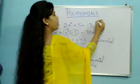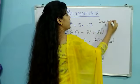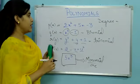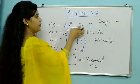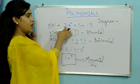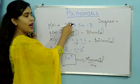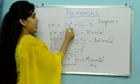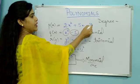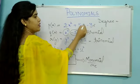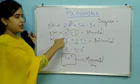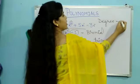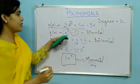Now when we talk about the degree of polynomials — what is the degree of a polynomial? The degree of this polynomial will be 2. Similarly, looking at this one...